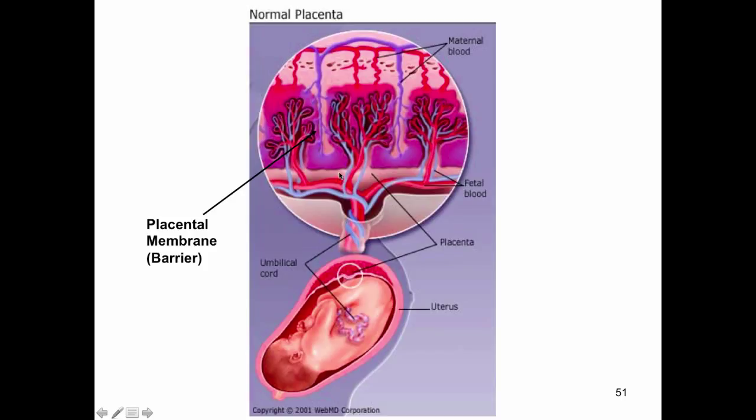The placenta, this is a fully developed mature placenta, is composed of a fetal component and a maternal component. The fetal component is the chorionic plate and the chorionic villi. The maternal component is the decidua basalis and the maternal blood vessels. In between the decidua basalis and the chorionic plate and chorionic villi, we have what's called the intervillus space. This intervillus space is filled with maternal blood.